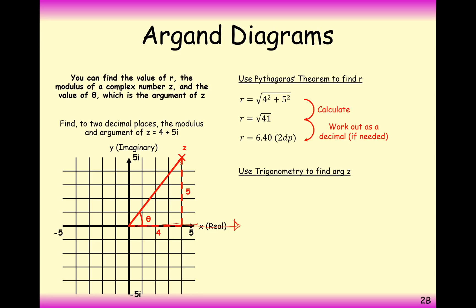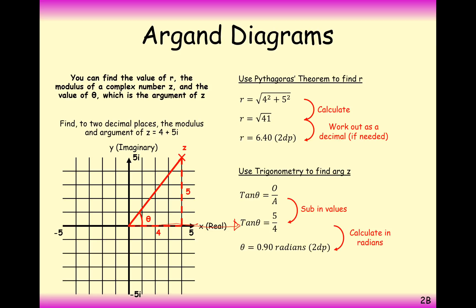We have a right-angled triangle, so it should be fairly straightforward. We have the opposite and the adjacent sides, so substituting those values and doing an inverse tan — and we're always working in radians here. Make sure your calculator is in radians mode: tan minus 1 of 5 over 4 gives us 0.90 radians to two decimal places.